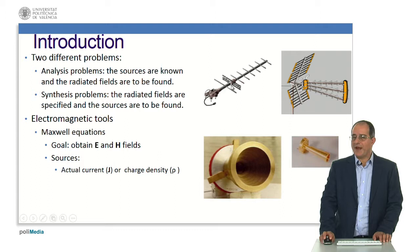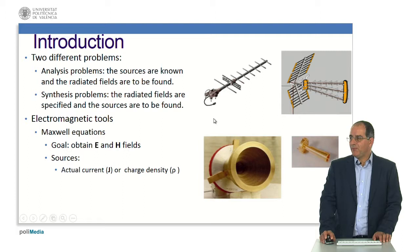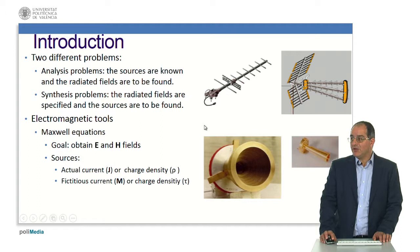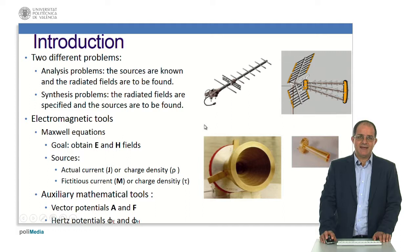But the situation is not the same when I have a horn antenna. When I have a horn antenna, it's very difficult to define an actual current density or a charge density. So, the most important thought would be to define a set of fictitious magnetic currents and a fictitious magnetic charge density in order to have a common solution to the previous problem.